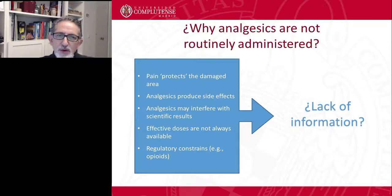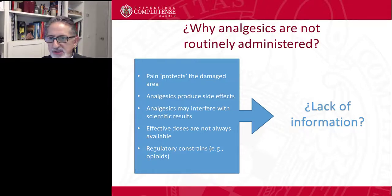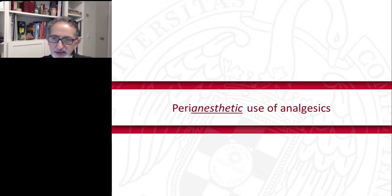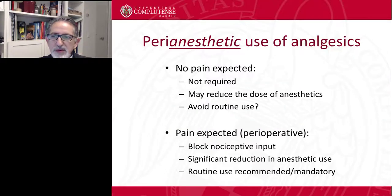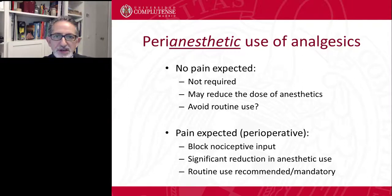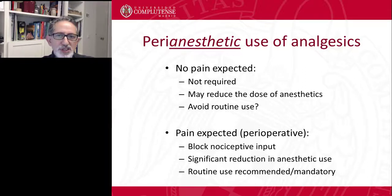As researchers, we may have a lack of information related to the best way to provide analgesia to our animals. What about the peri-anesthetic use of analgesics? We may consider analgesics when no pain is suspected — for example, because the procedure is not painful. So analgesics might not be required, although they may reduce the dose of anesthetics we use. For example, it's quite common to produce sedation with opiates such as methadone, which may reduce the amount of anesthetics used, thus reducing adverse effects from higher anesthetic doses.